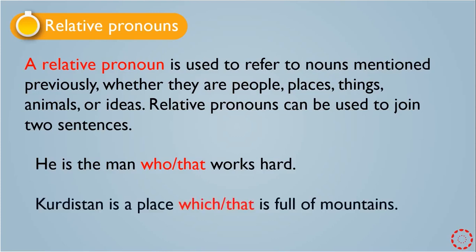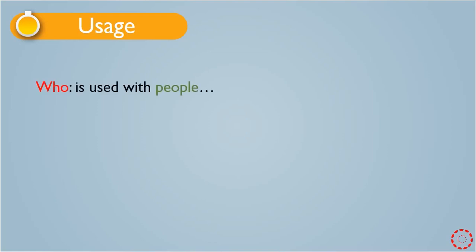'Kyrgyzstan is a place which is full of mountains' or 'Kyrgyzstan is a place that is full of mountains.' Here we join two sentences again. We are talking about a place, so the relative pronoun here is 'which' or 'that.' 'Who' is used with people — when we talk about people we should use 'who.'